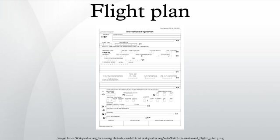In the USA and Canada, for eastbound IFR flights, the flight plan must list an odd flight level in 2,000-foot increments starting at FL190. However, air traffic control may assign any flight level at any time if traffic situations merit a change in altitude.